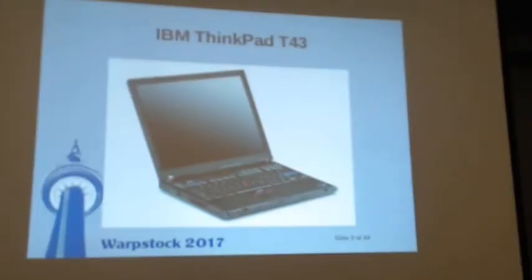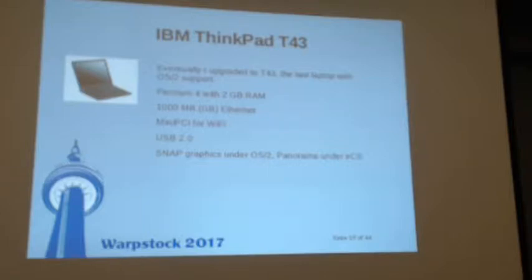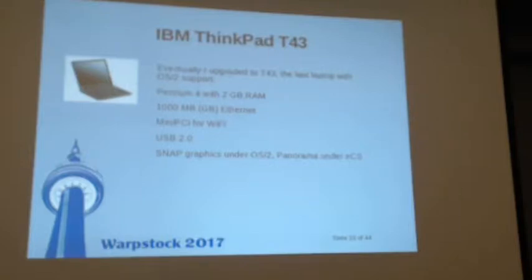The T43 — a lot of people are still using this one. It has bigger screens, more resolution, two gigabytes of RAM, and fast Ethernet, which was nice. Mini PCI for Wi-Fi is on board — no longer carrying that card, which is easy to break. It had SNAP graphics with terrific acceleration, which somehow along the line in eComStation broke. I don't remember what it was that said SNAP wouldn't run anymore on a T43, but it was kind of sad.